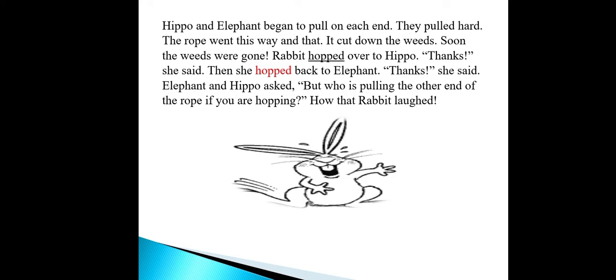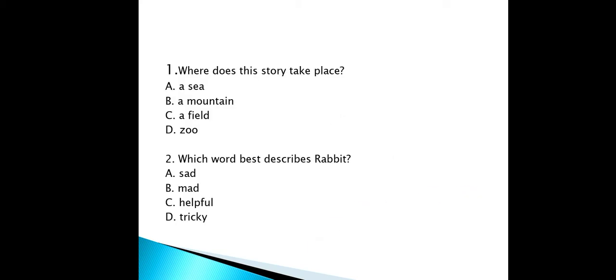Question number one: where does this story take place? The options are: A — a lake, B — a mountain, C — a field, D — a zoo. There is one correct option you have to choose.